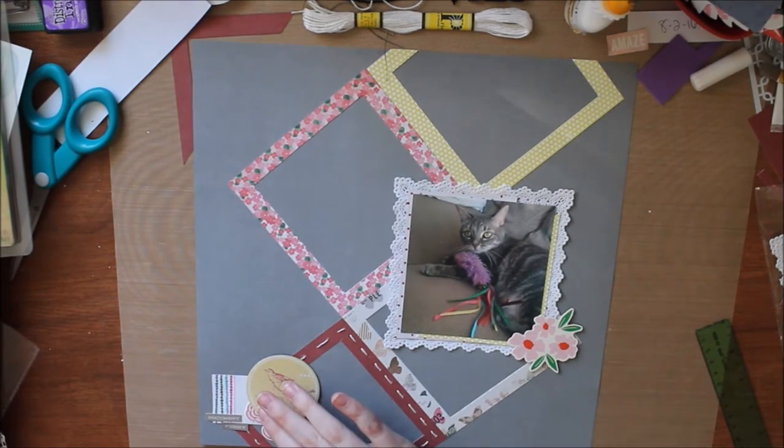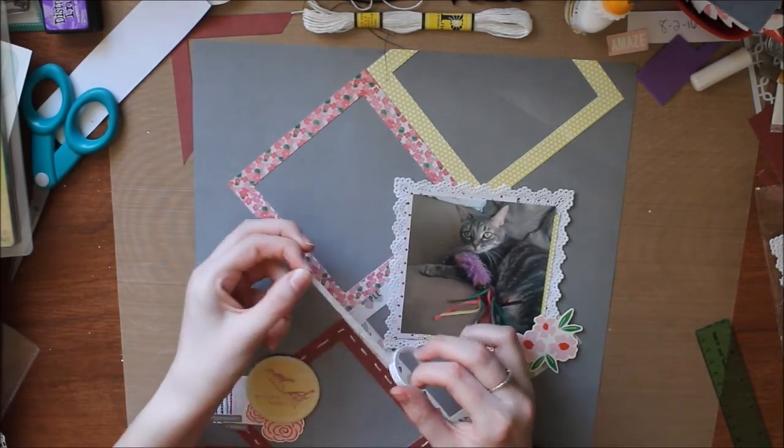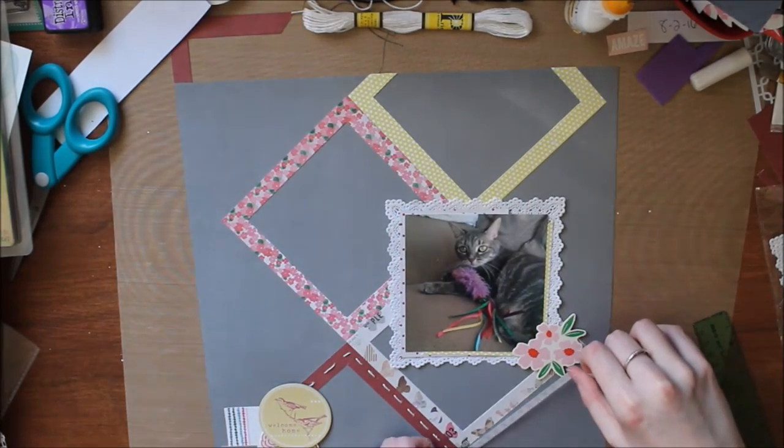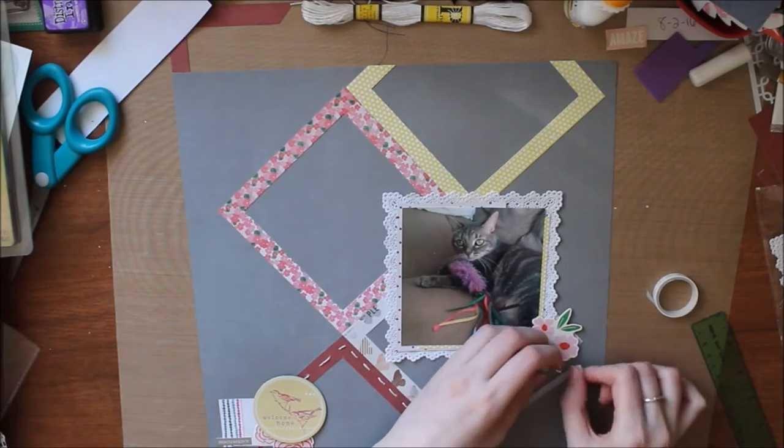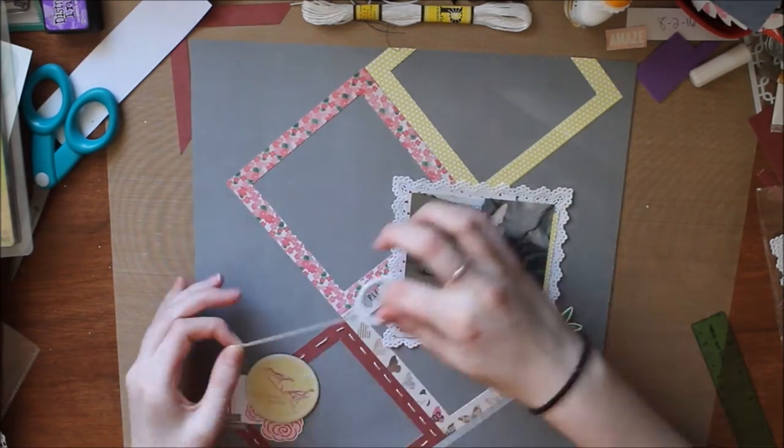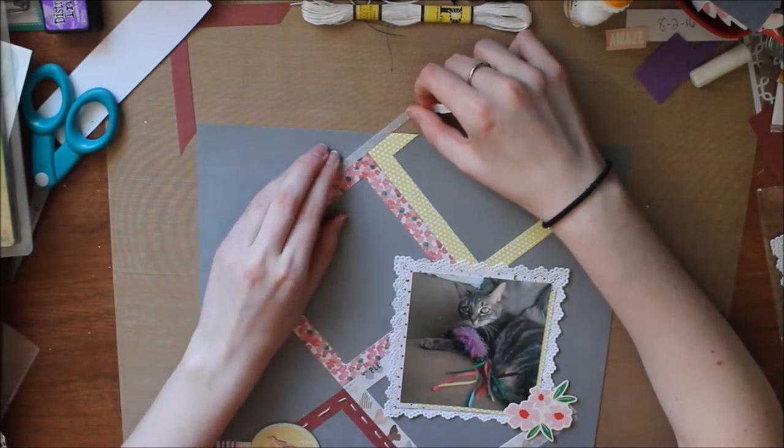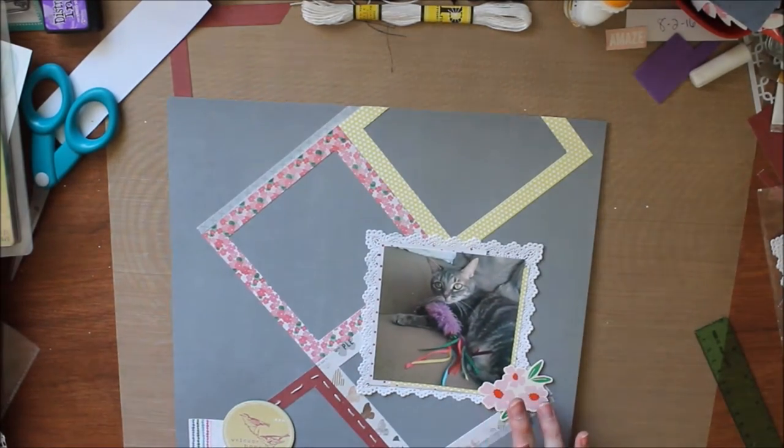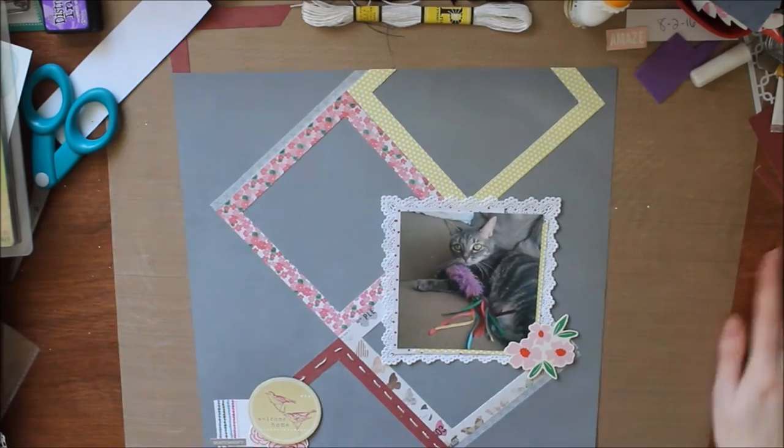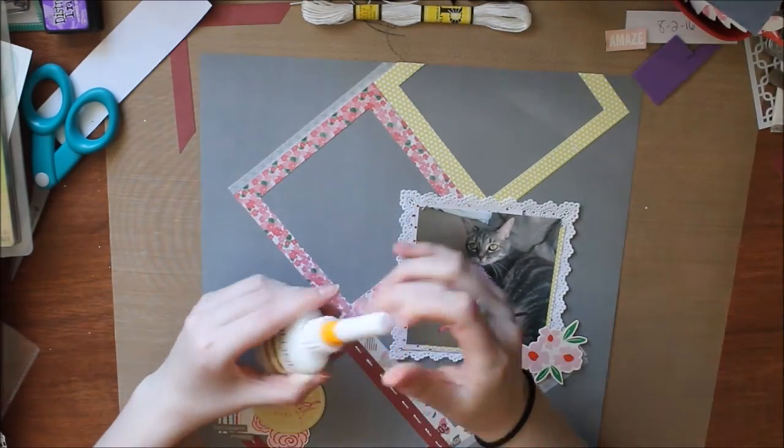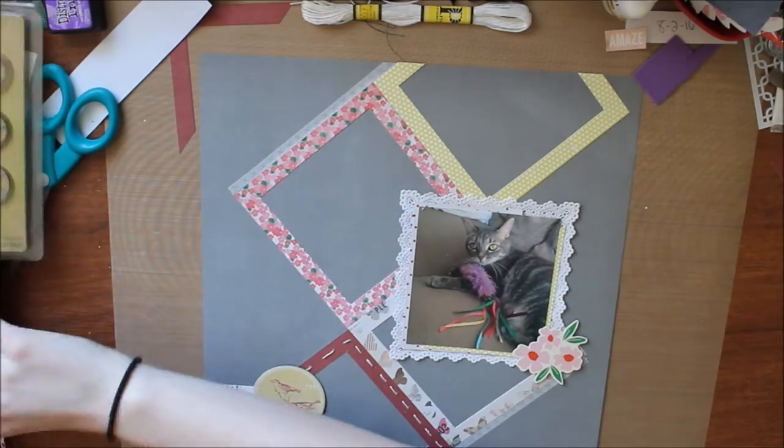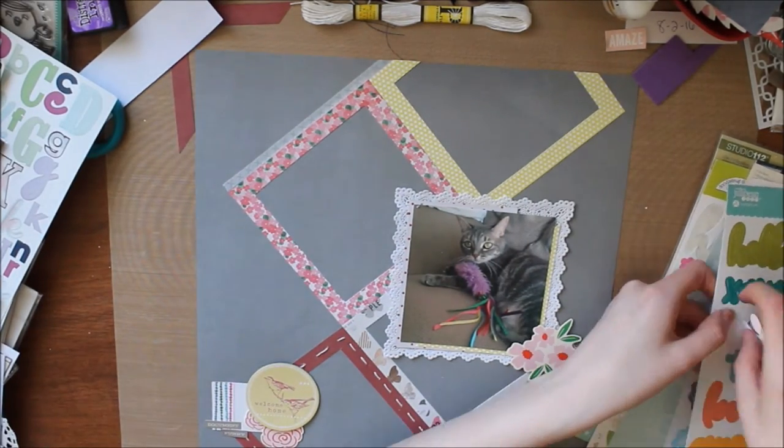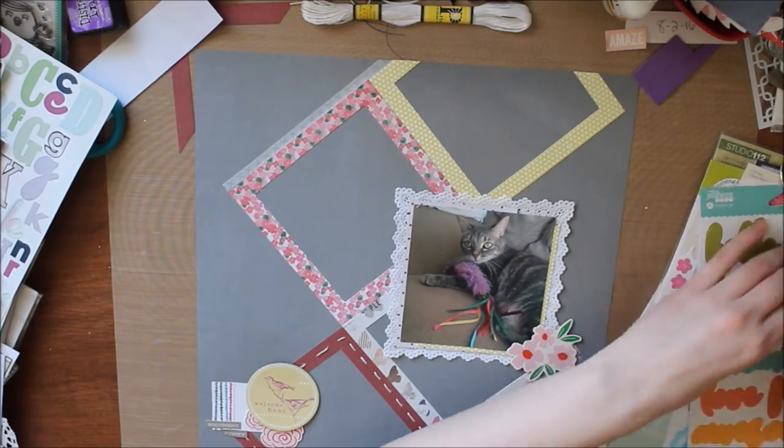I look at some of my washi tapes and I pull out the gray one. So this is a thin washi tape from the dollar store and I put it in the bottom right hand side and the top left hand side. So it just adds a little bit more to the diamond shape. I don't really like how that turned out but it had this faux stitching effect I kind of liked so I left it.